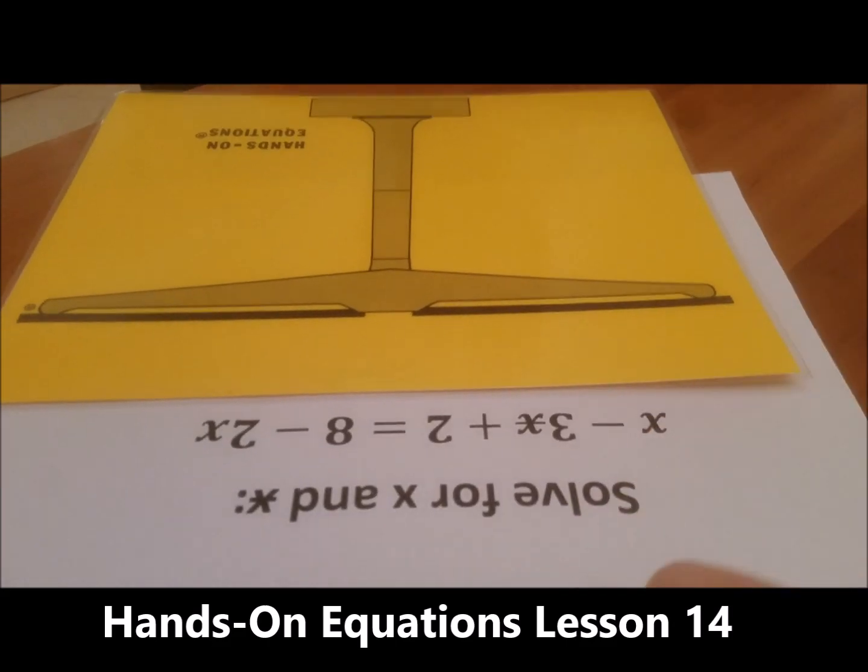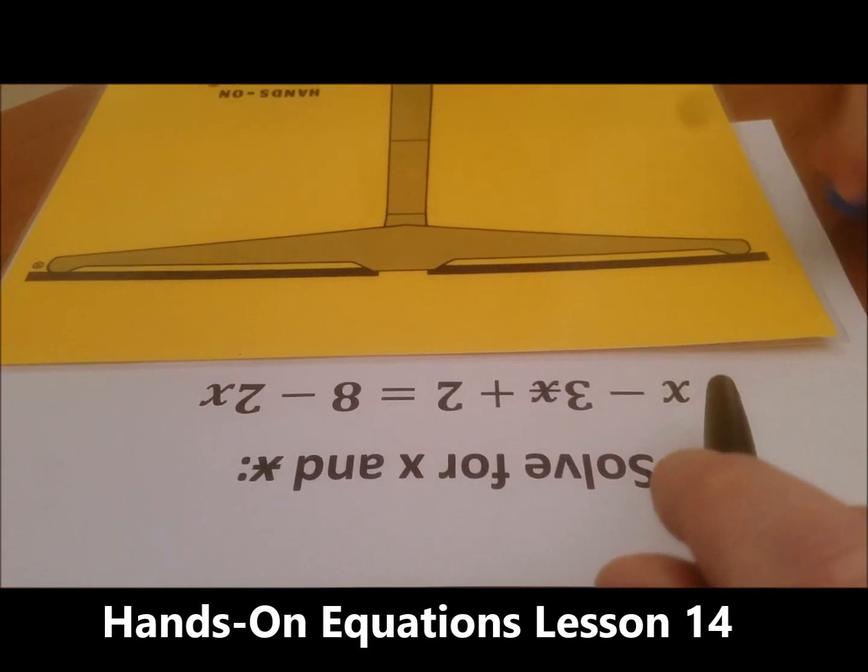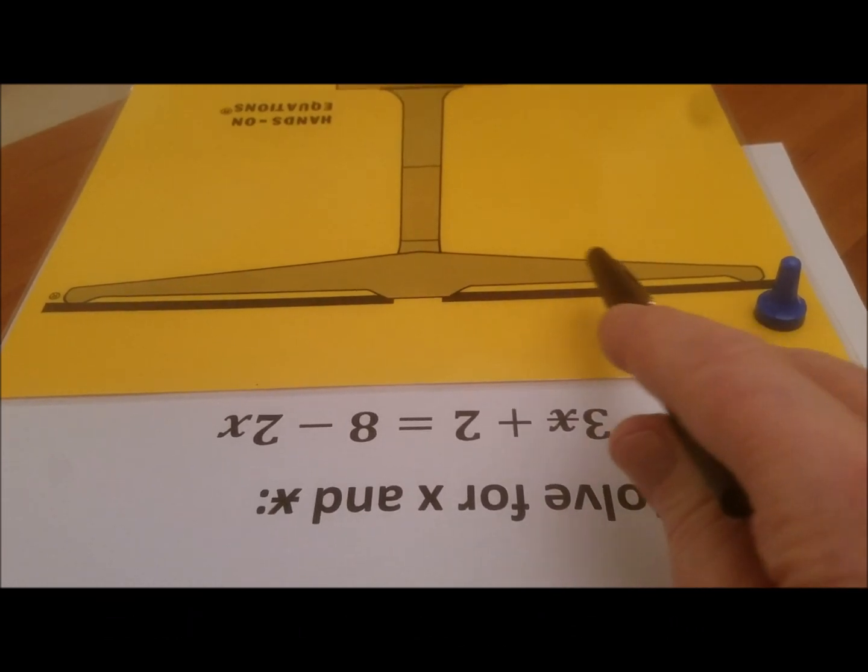Okay Moshe, we're going to try this problem. This is a new lesson, lesson 14. Begin with the X. Place a blue pawn here please. X. Now it says to take away three stars, but we don't have any white pawns to take away here.